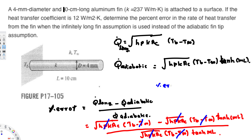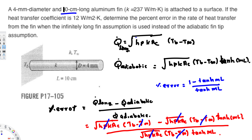So the percentage error equals 1 − tanh(mL) over tanh(mL). We need the values of m and L. The length L = 10 cm is already given, but the m value is not provided and must be calculated.